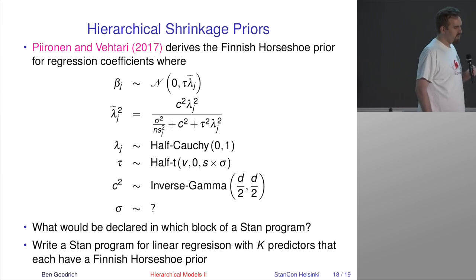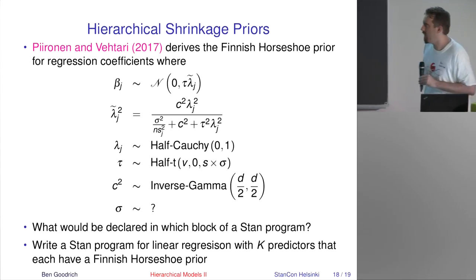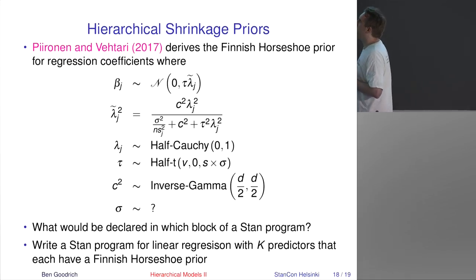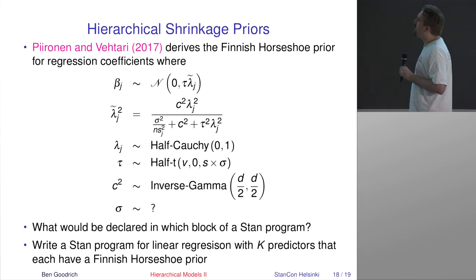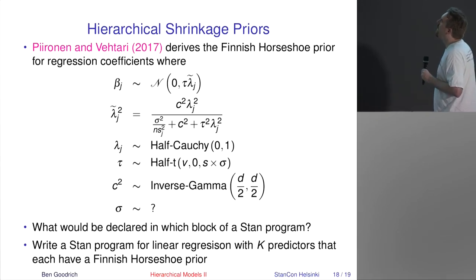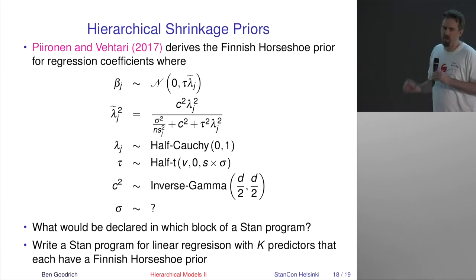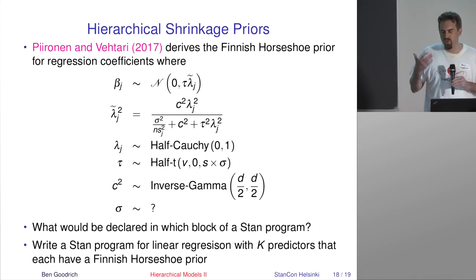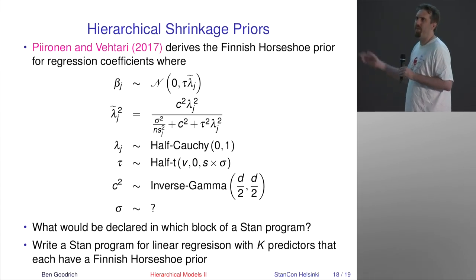As an exercise to walk away with: Juho Piironen and Aki recently wrote a paper where they derived what Andrew Gelman calls the Finnish horseshoe prior for regression coefficients, which is similar to the original horseshoe prior.